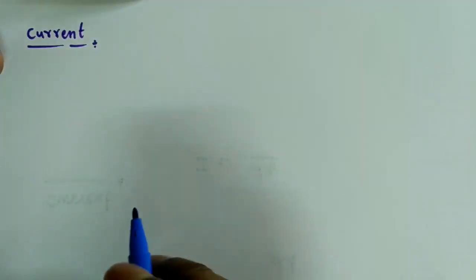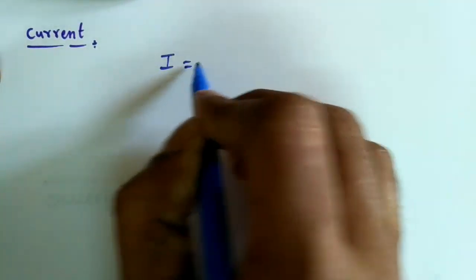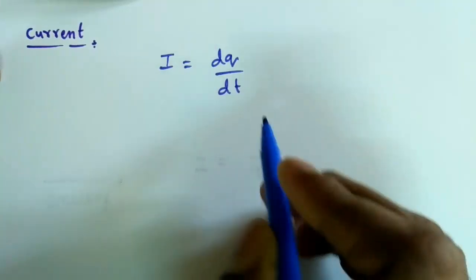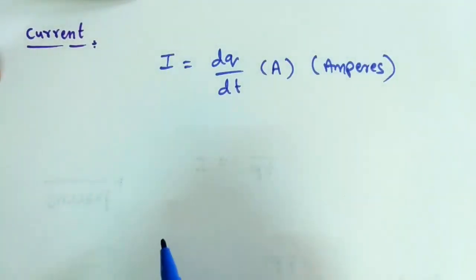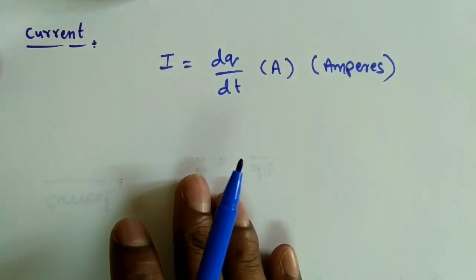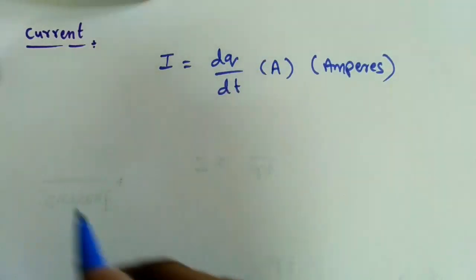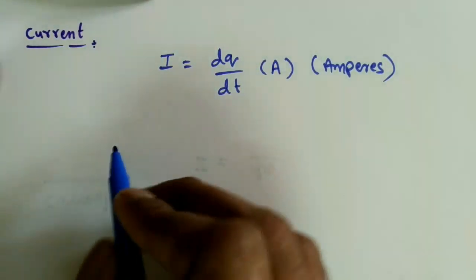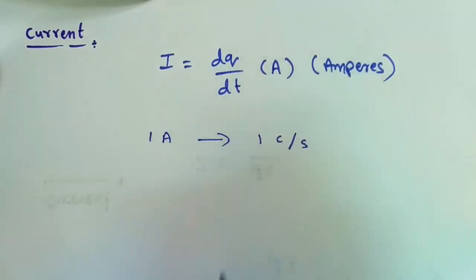Next, we will see what is current. Current is the rate of net motion of electrical charges across a cross-sectional boundary. Remember: only when there is net motion of electrical charges per unit time is current produced — random motion does not produce current. We can represent it as I = dQ/dt, with units of amperes.